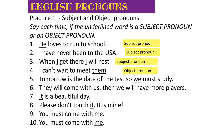Number four is an object pronoun - 'them' is not meeting, 'them' is being met. The action is being done to them, so it is the object. Number five is a subject pronoun because 'we' is doing the action - 'must' is a modal verb, 'study' is the action, so it is a subject pronoun. Number six, 'us' is the object pronoun. It's a trickier one because there's a preposition - it's technically the object of the preposition, but that still makes it a kind of object.